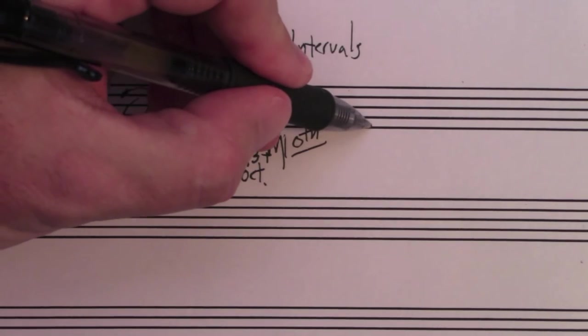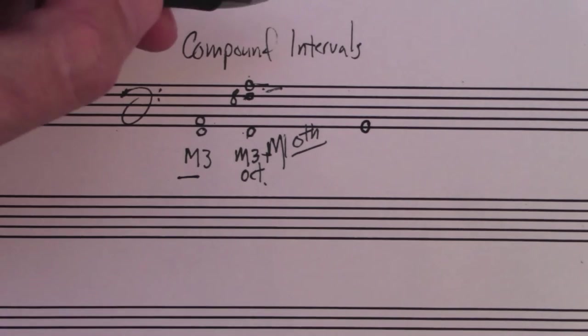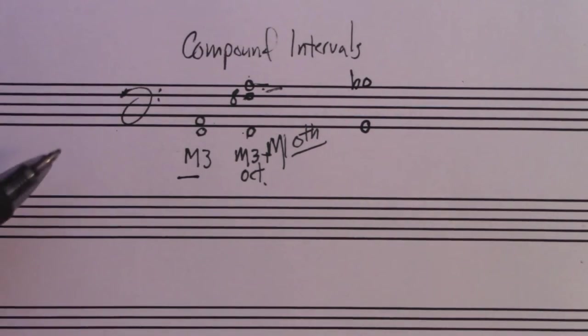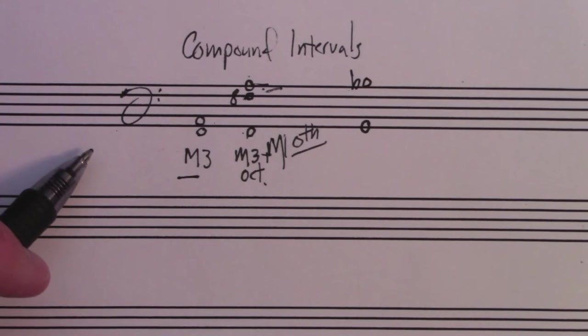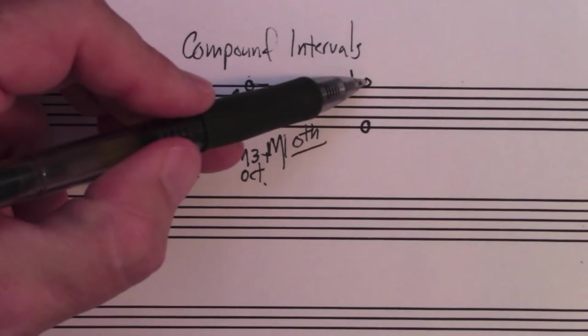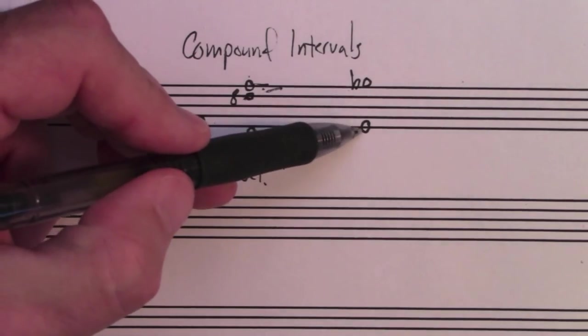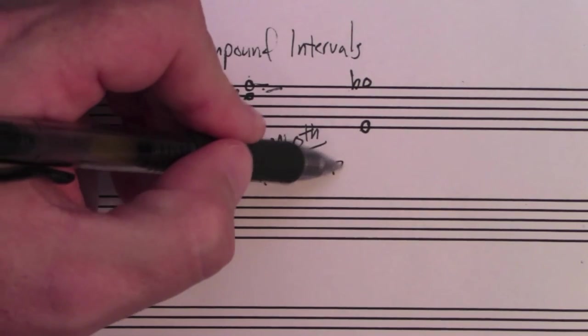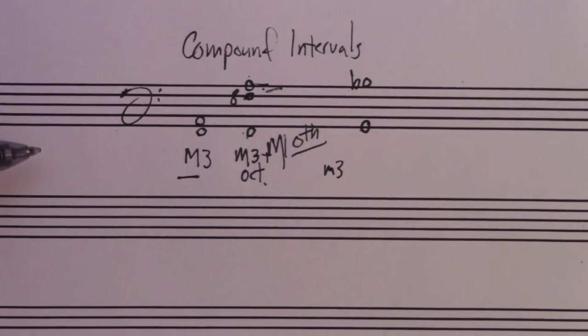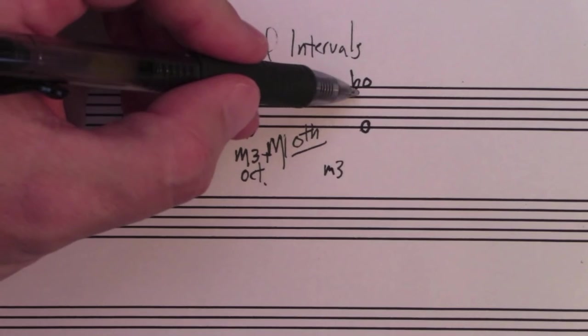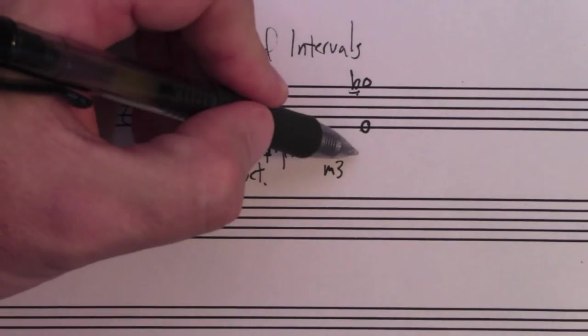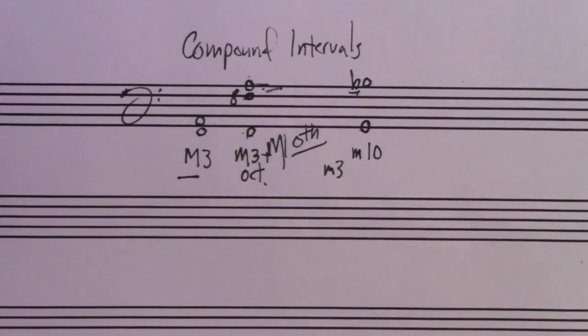So if I had G up to B-flat. Well, if it was this G to this B-flat, would you be able to figure out that that's a major third? But what we have here is, there's your octave, nine, ten. We have a minor tenth.